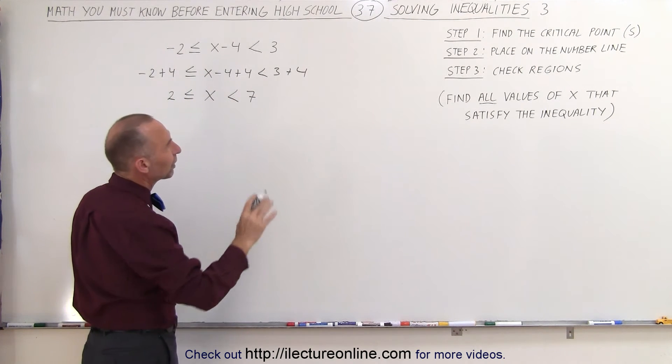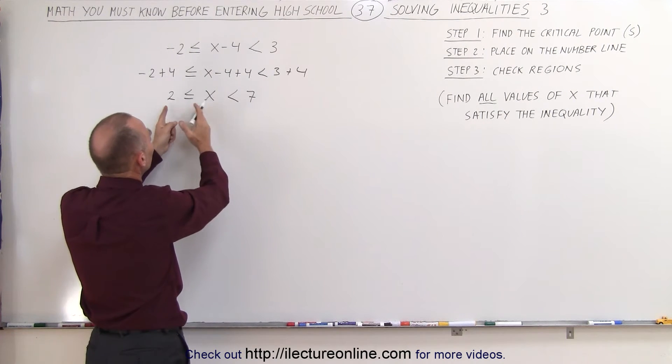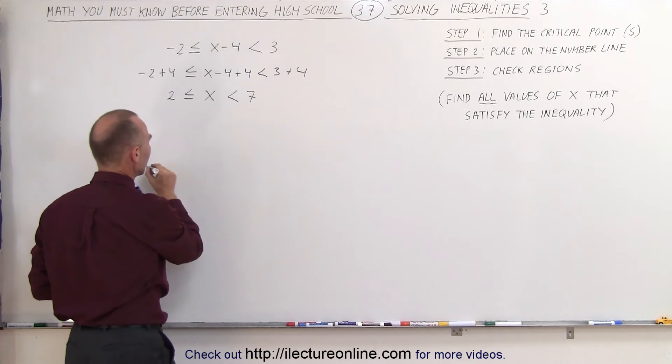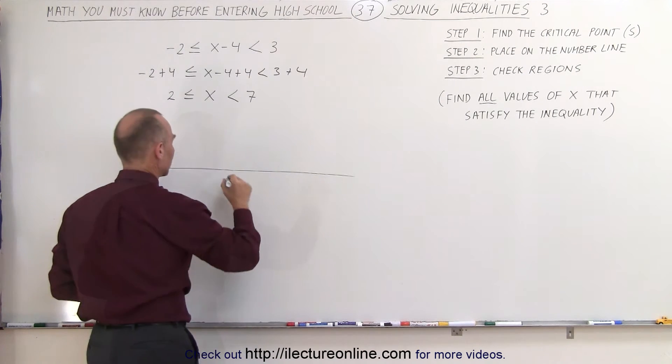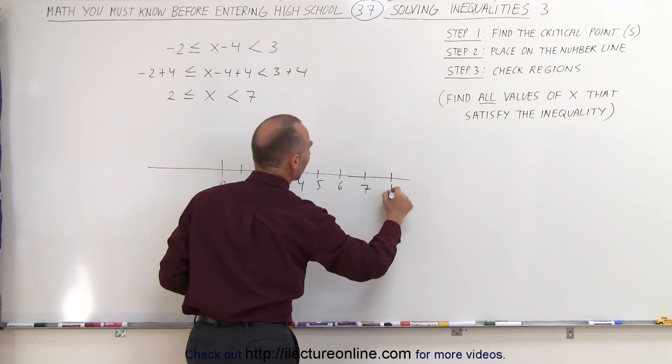What we need to do now is we can skip the next step because we found the critical points. We know the values of x must be between these values, so if we draw a number line, and here we have the number 0, a little longer here, 6, 7, and 8.